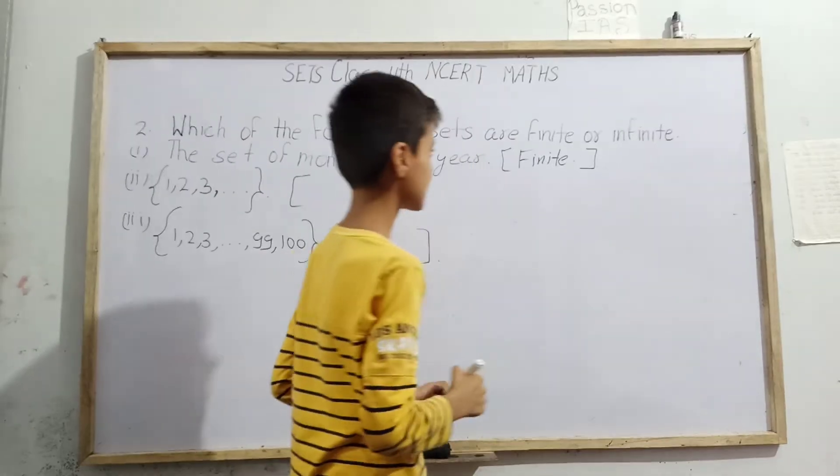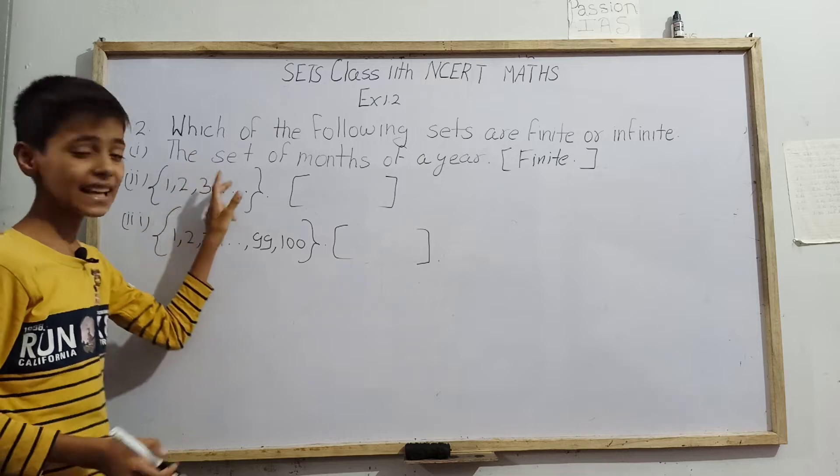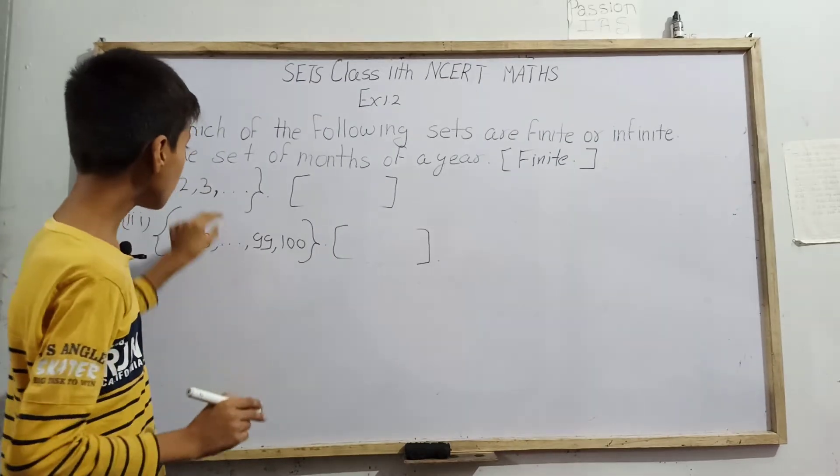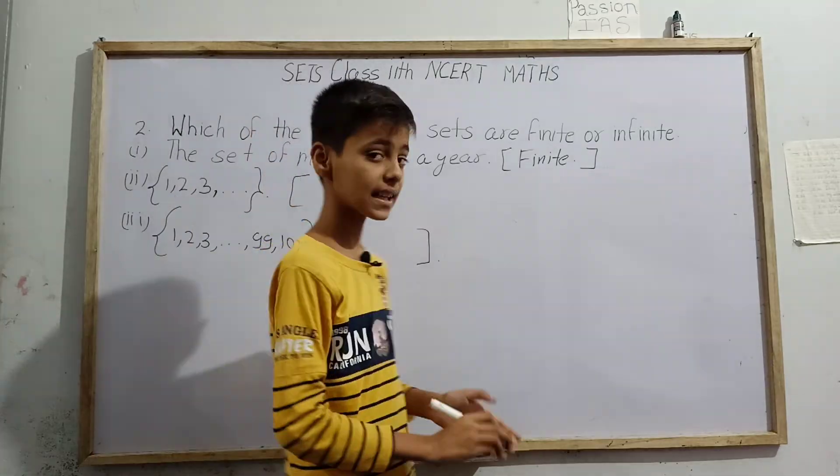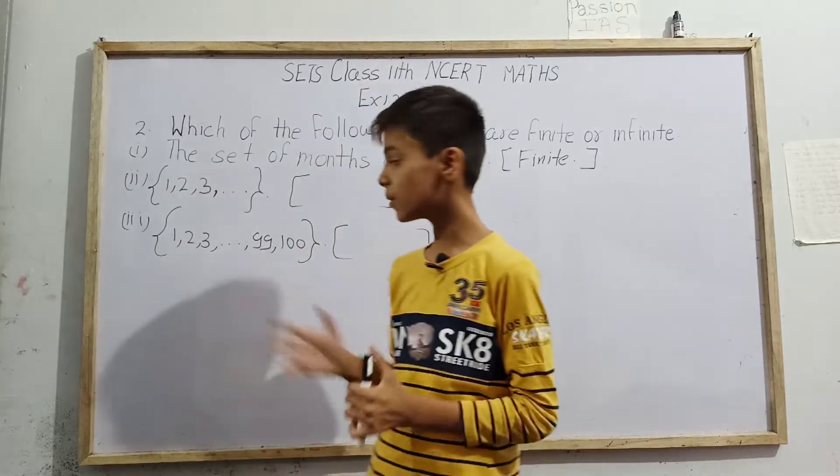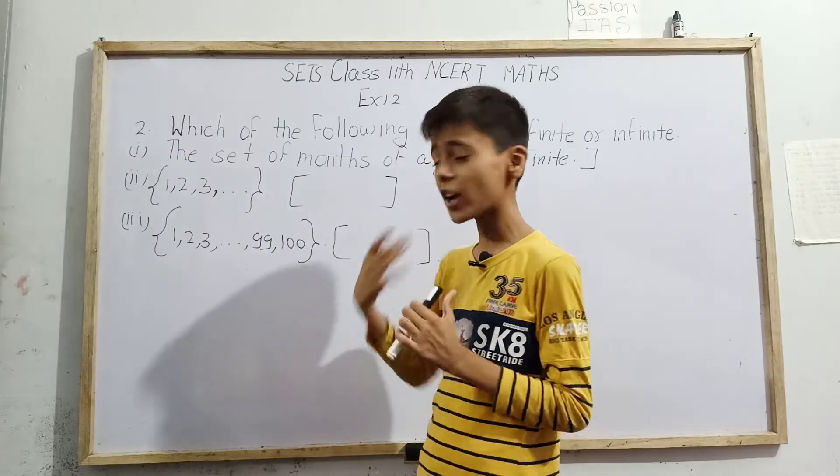Next we have {1, 2, 3, ...} and later only dots are given. So what do those dots mean? Let me tell you. This is a set of natural numbers, all natural numbers. Those dots mean they are going very far, so far away that we cannot count them.